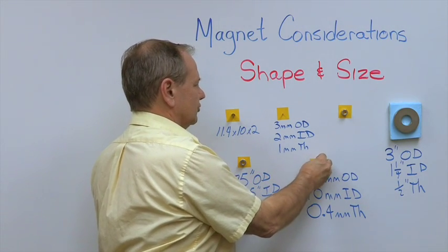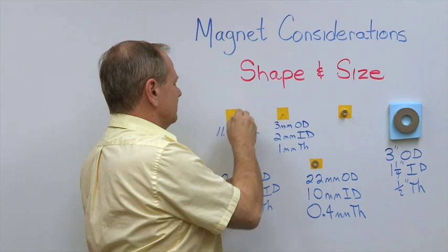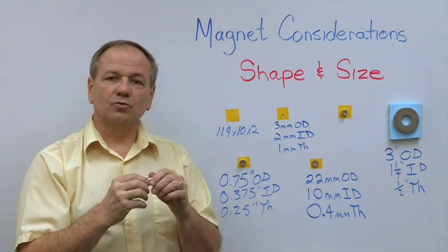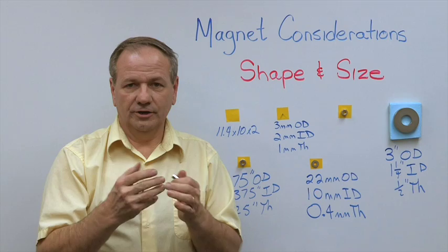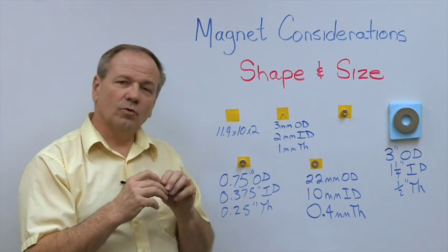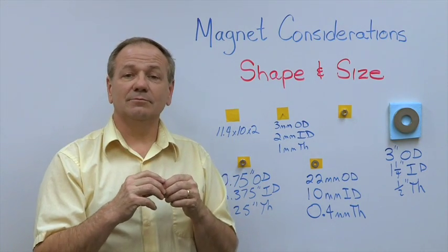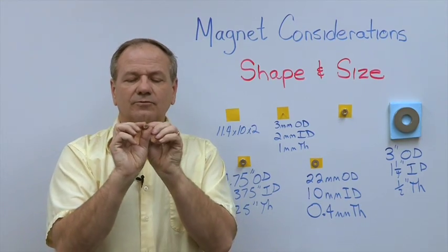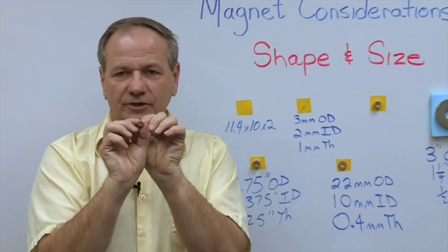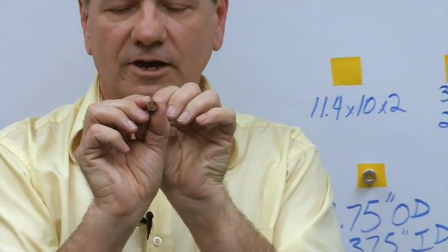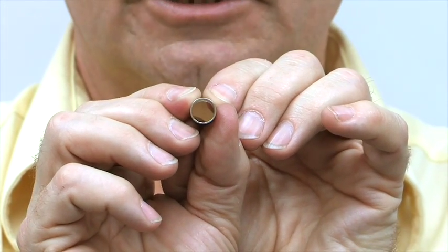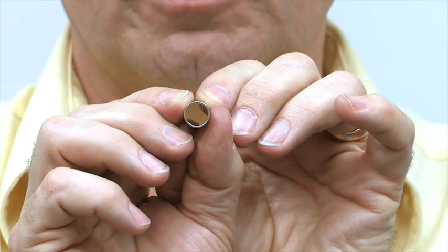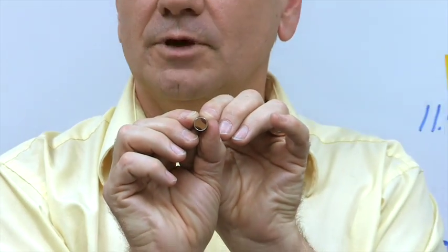Now one of the other things that becomes a constraint in making ring magnets is the difference between the OD and the ID. We would call that wall thickness. This ring magnet that has an 11.4 millimeter OD, 10 millimeter ID, illustrates about the thinnest wall that the manufacturers can make. If you look at how thin that wall is, it is not much thicker than a sheet of paper. It's 0.7 millimeters thick.